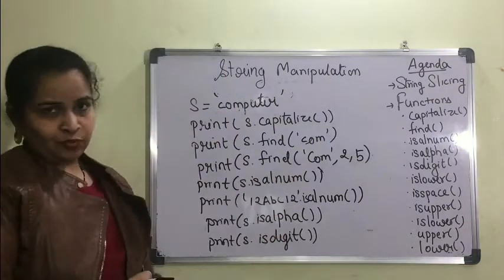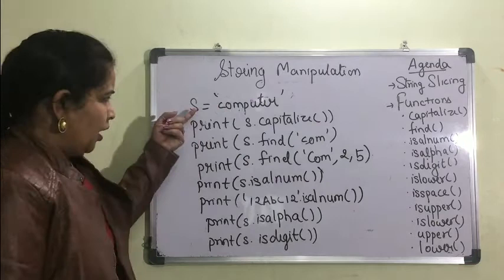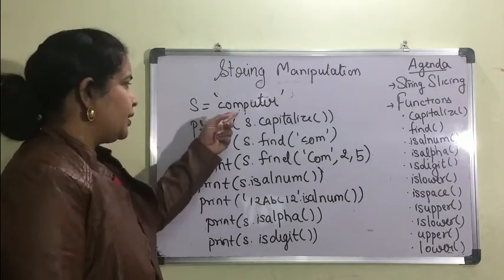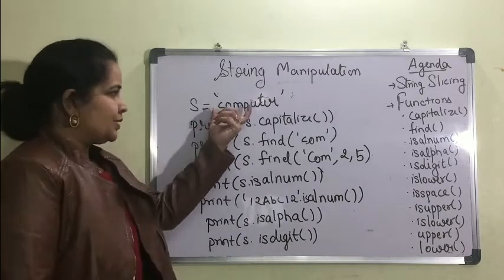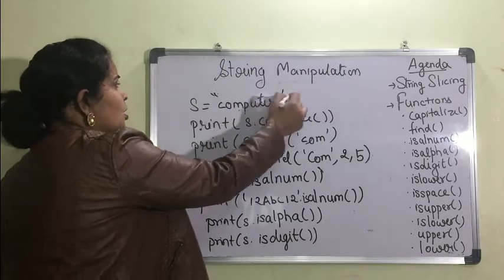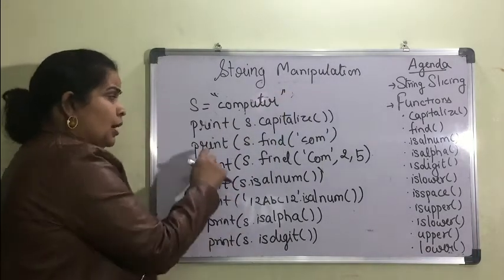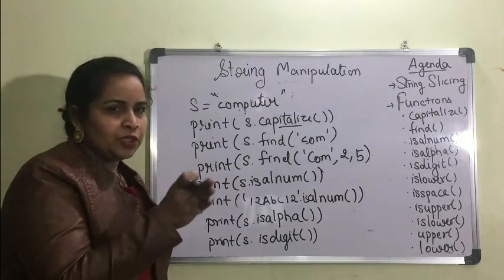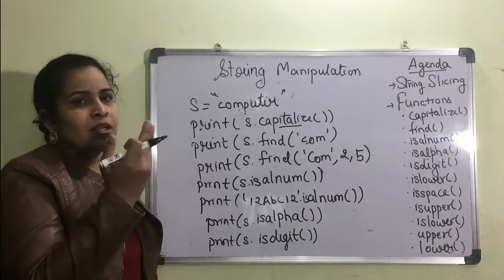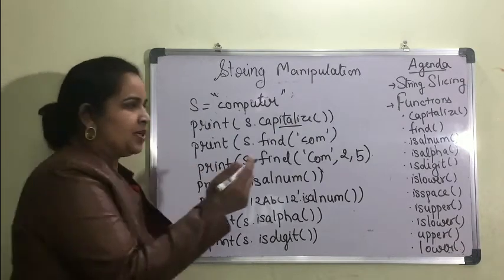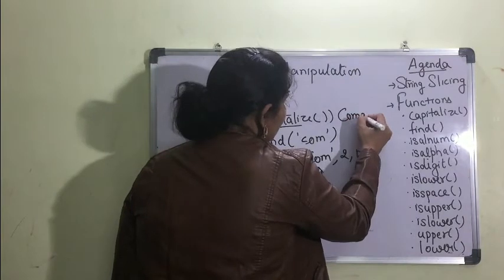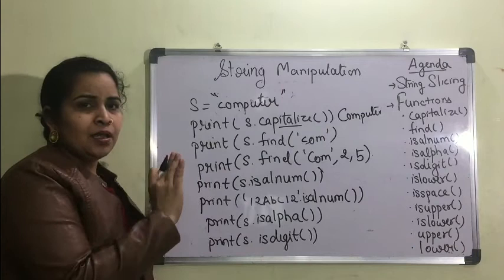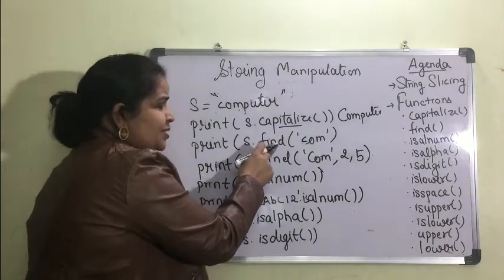We'll start with functions. Suppose s is an identifier which contains the string 'computer' — enclosed in single or double quotes. print(s.capitalize()) — capitalize is a function that will make the first character uppercase. The output will be 'Computer'; rest of the characters remain the same.